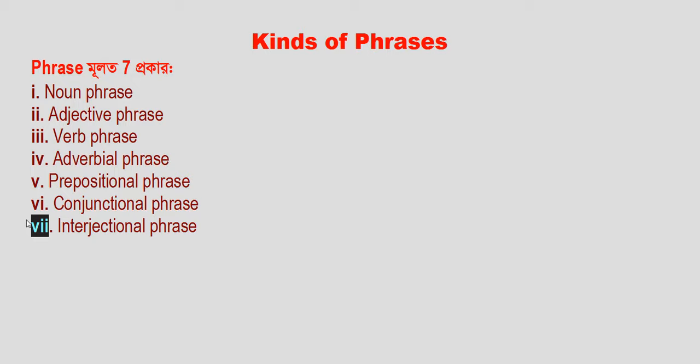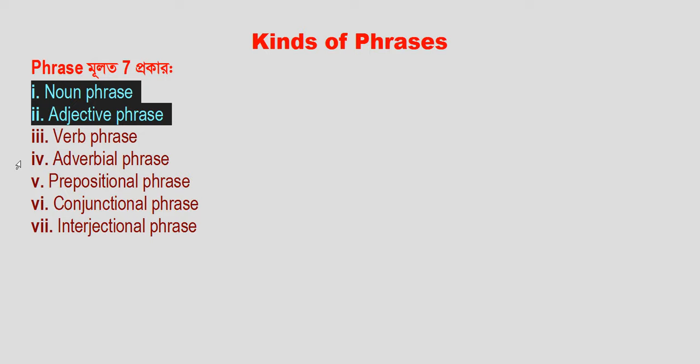Now we have started with the first — noun phrase — and the second — adjective phrase. When we ask the question, the main phrases are: noun phrase, adjective phrase, adverb phrase, and preposition phrase. That means basically noun phrase, adjective phrase, adverbial phrase, and preposition phrase.